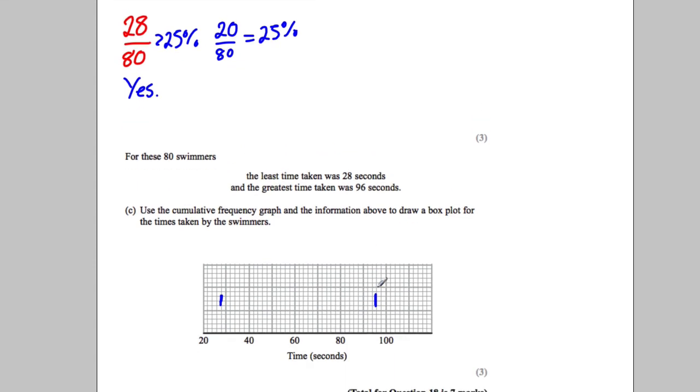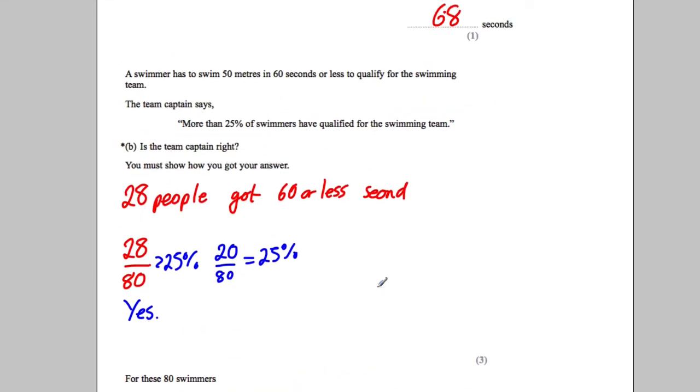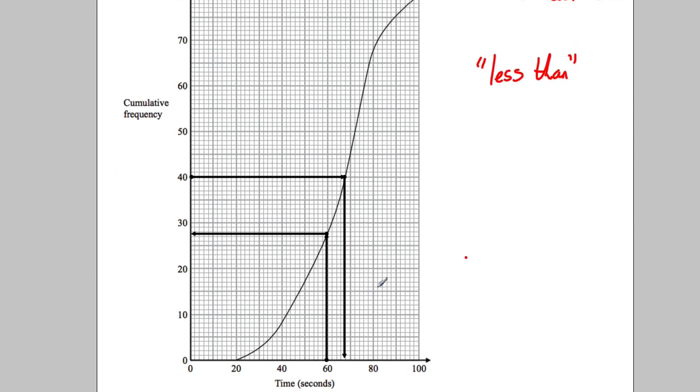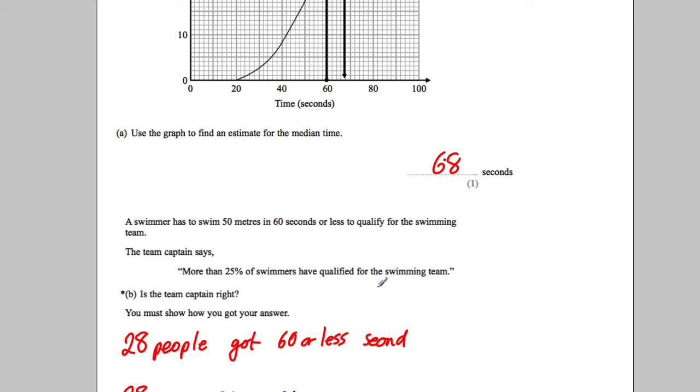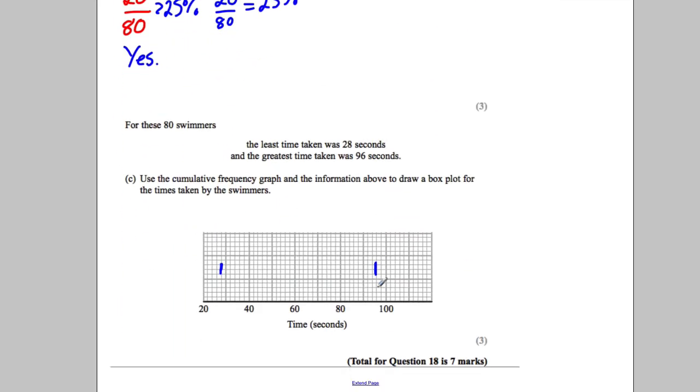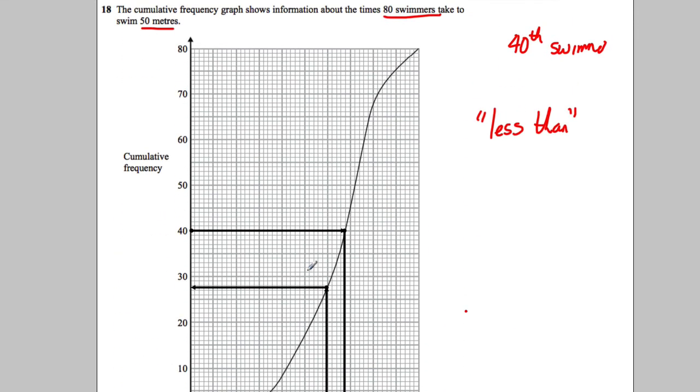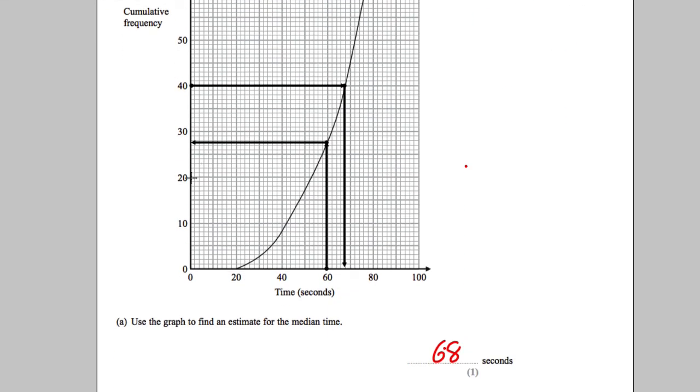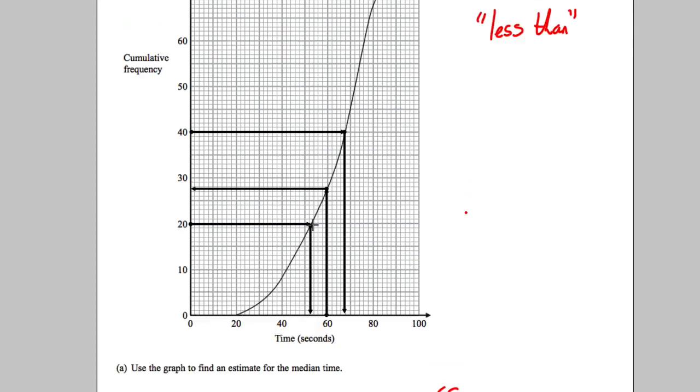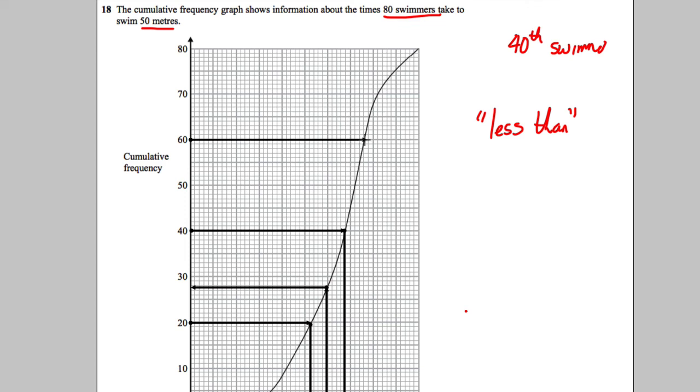Use the cumulative frequency graph and the information to draw the box plot. So we need the median. We've already estimated the median at 68 seconds from a previous part. So 68 seconds would be here. And we want the lower quartile and the upper quartile. So if there are 80 people, the lower quartile is at 20 people. It would be here. So we read that off the graph. And also the upper quartile would therefore be at 60. So again, we read that off the graph.